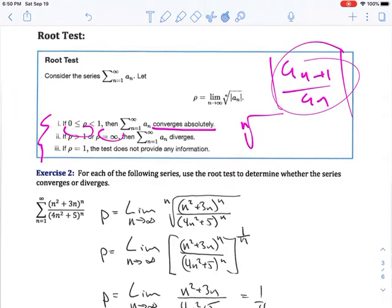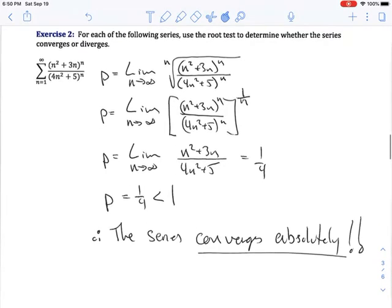All right, so let's take a look at the first example. So here is our series. Now, how do you know that you might want to even use the root test? Well, in this particular case, notice that the numerator and denominator are both being raised to the n-th power. So if you've got a situation where you've got terms like this that are being raised to the n-th power, you can simplify it by raising all of that to the n-th root.